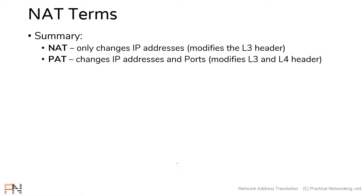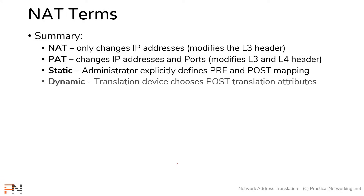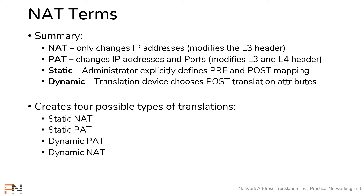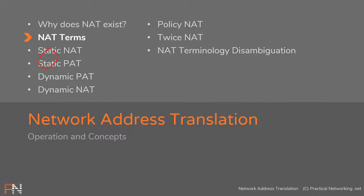So in this section, we looked at the definitions of the words NAT and PAT, and the definitions of the words static and dynamic. For NAT, the difference is that it only modifies the layer 3 header — aka only the IP address. For PAT, it modifies both the layer 3 and layer 4 header — aka both the IP addresses and the ports. A static translation is an explicitly defined mapping between pre- and post-translation attributes, whereas in a dynamic translation, the translation device is actually choosing the final post-translation attributes. If you understand these terms, you can have a basic definition of what each of the four possible translations do, and we're going to pick these apart in the next few lessons.